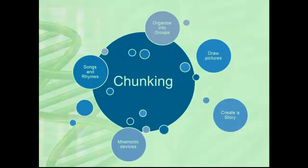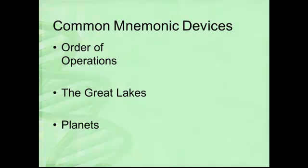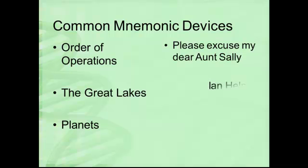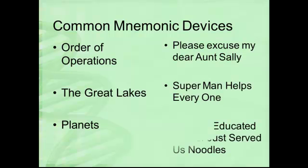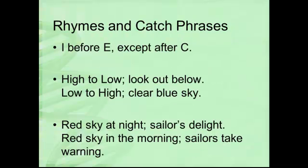Draw pictures and create a story out of the words — this helps people remember things a lot. Mnemonic devices, songs, and rhymes are also really good ways for remembering and chunking words. For example, you've likely seen mnemonic devices — a catch phrase or trick for remembering things — like the order of operations, all five great lakes, or the planets from the sun to outer space. Rhymes and catch phrases like 'I before E, except after C' are another way that helps us remember rules.